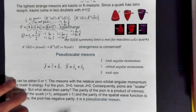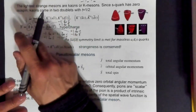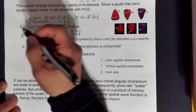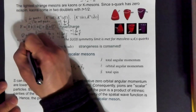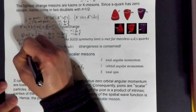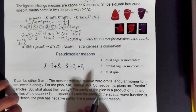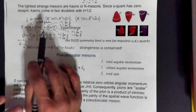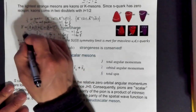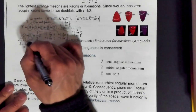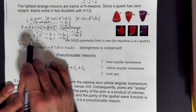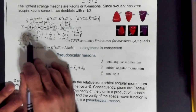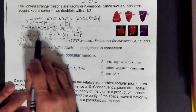The isospin component T₃ — the z-component of isospin — gives +1/2 for the up quark and -1/2 for the down quark, and is zero for all other quarks. Going through these combinations, you find that the electric charge can be written as T₃ plus one-half of the hypercharge.